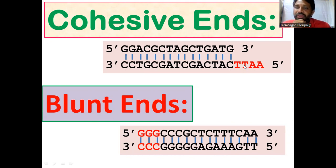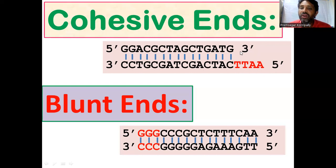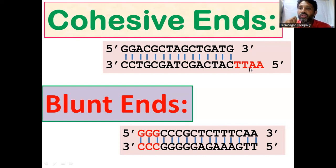The only difference between the cohesive ends and blunt ends is the shape of the complementary strand. In the case of cohesive ends, one of the strands is a little longer than its complementary strand — five prime to three prime, three prime to five prime. The three prime to five prime strand is four nucleotides longer than the five prime to three prime strand. So these four nucleotides are unpaired. The end which is having the unpaired single-strand nucleotides is called a cohesive end.